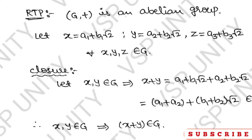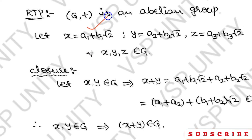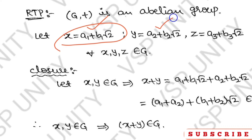Let us take three elements x, y, z — all belonging to G. Every element in G is in the form a + b√2. So, x = a1 + b1√2, y = a2 + b2√2, z = a3 + b3√2.